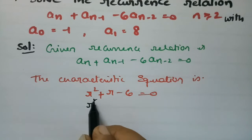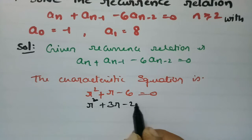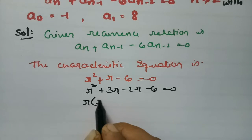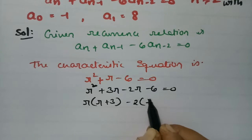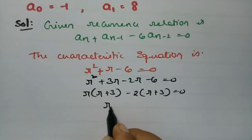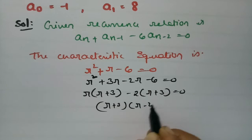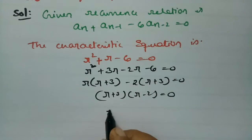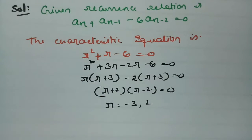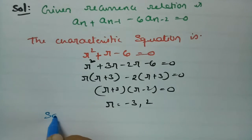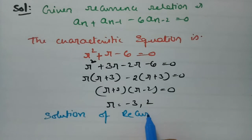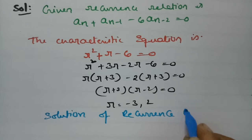We need to find the factors of R² + R - 6 = 0. The factors of 6 are 3 and 2. So this becomes R² + 3R - 2R - 6 = 0. Taking R common gives R(R + 3), and taking 2 common gives -2(R + 3). Taking (R + 3) common: (R + 3)(R - 2) = 0. Therefore R = -3 or R = +2.